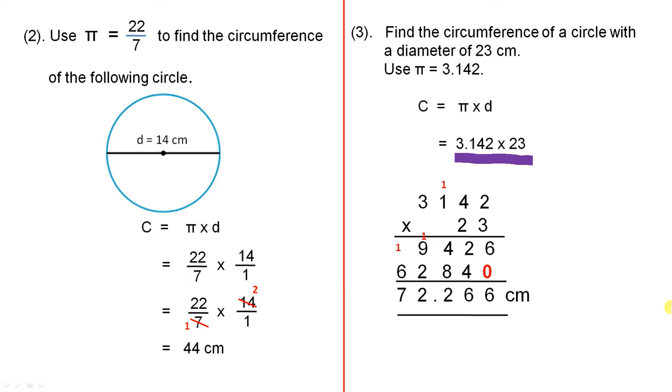This video has shown us how to find the circumference of a circle when we are given either the radius or the diameter. We've had some approximations for pi, which is 22 over 7 or 3.142, and we just use the appropriate formula from the two that we were given.